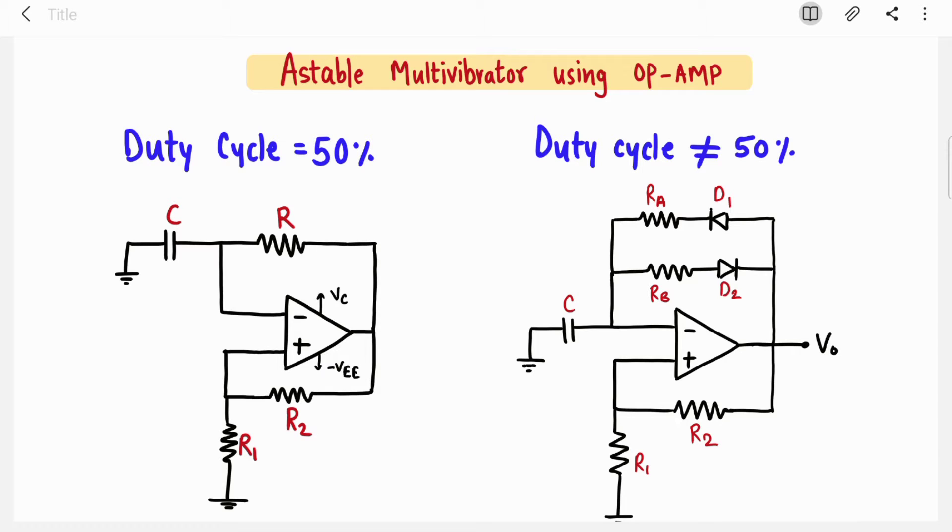Hi guys, welcome back to my channel. In this video, we are going to design an astable multivibrator using op-amp where duty cycle is not 50 percent. You can call it asymmetrical astable multivibrator or asymmetrical square wave generator.